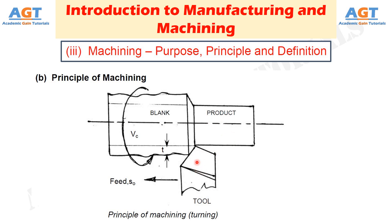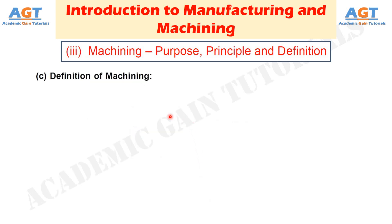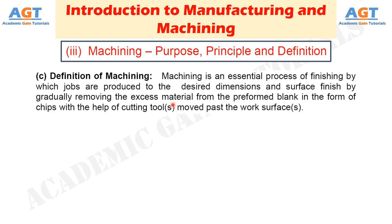So finally, how can we define machining? In very simple words, machining is an essential process of finishing by which jobs are produced to the desired dimensions and surface finish, by gradually removing the excess material from the preformed blank in the form of chips, with the help of cutting tools moved past the work surfaces.